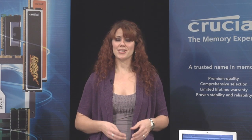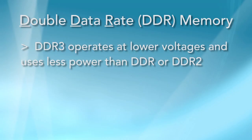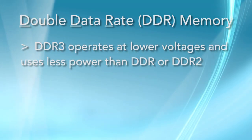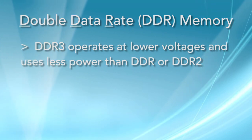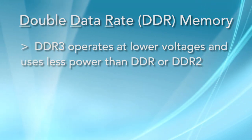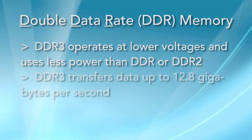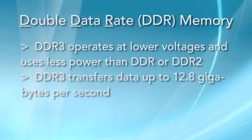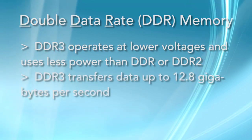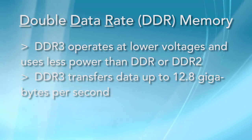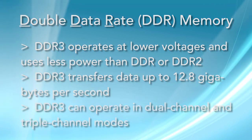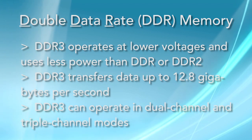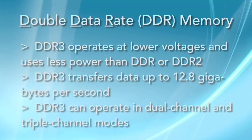If you've recently purchased a new computer, it probably uses DDR3 memory. Improvements in semiconductor manufacturing have allowed DDR3 to operate at lower voltages and use less power than its predecessors. It's also faster, transferring data at rates up to 12.8 gigabytes per second. DDR3 can be installed in sets of two or three modules to run in dual or triple channel modes, increasing performance over that of a single module.